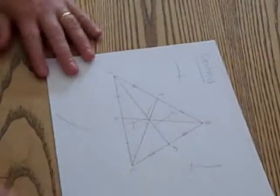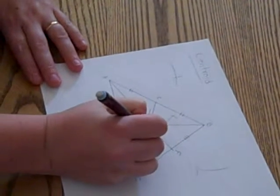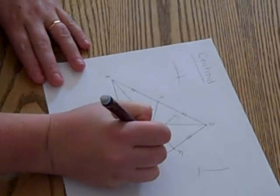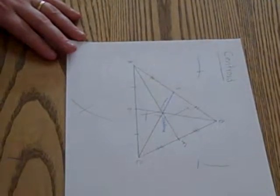The point in the middle, where they all meet, is the centroid. The point of concurrency of the three medians. Let's label that point Z.